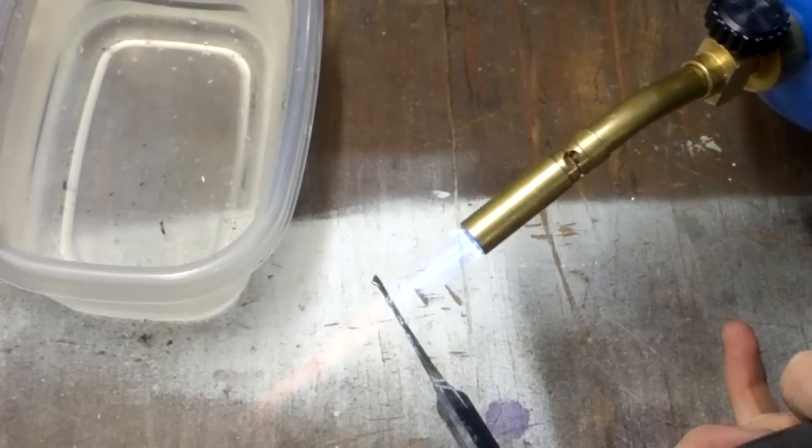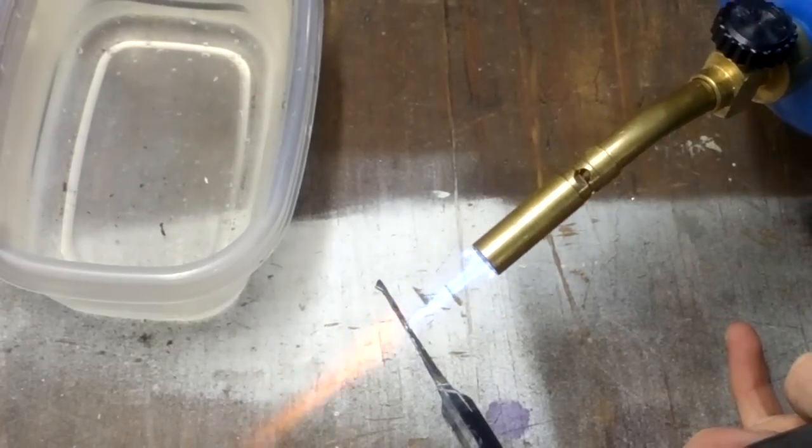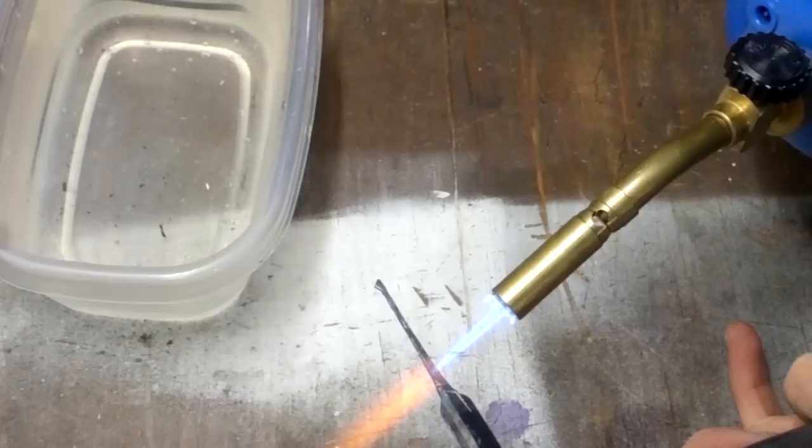Now we have to harden the new pick. To do this, we use the propane torch and try to get the entire soft end red hot at the same time.